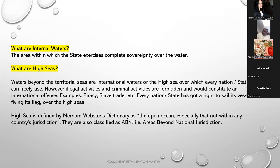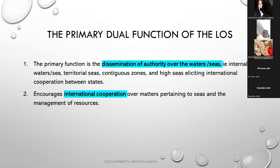The primary function of the law of the sea is basically dual in nature. You can bifurcate it as: one, dissemination of authority over waters and seas - that is distribution of authority over internal waters and territorial waters - which elicits international cooperation between the states; and two, international cooperation over matters pertaining to the seas and the management of resources.